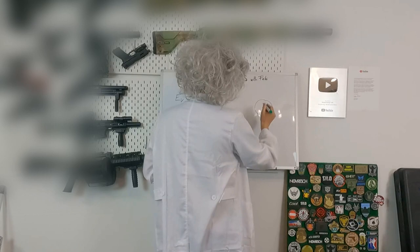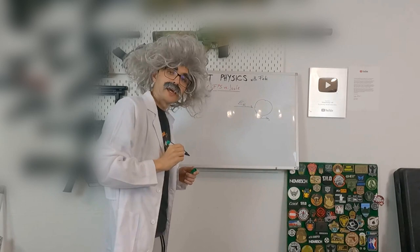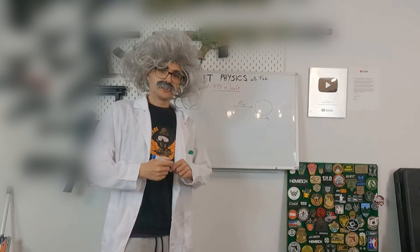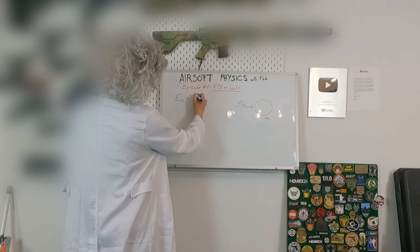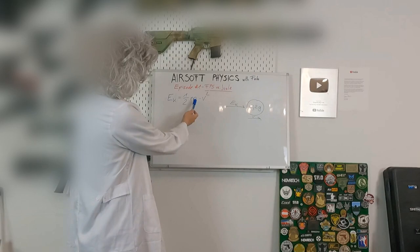Your BB needs a certain velocity to fly through the air. So we need to put energy into the BB so it can accelerate in the barrel, reach its speed, and fly through the air. So let's see what the equation for kinetic energy looks like: it's half times the mass of an object multiplied by the velocity squared.